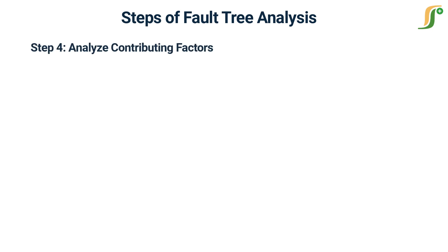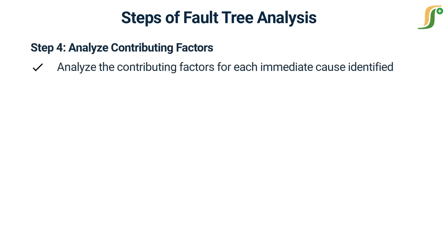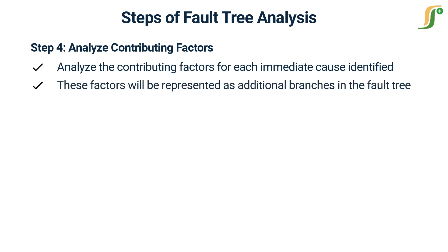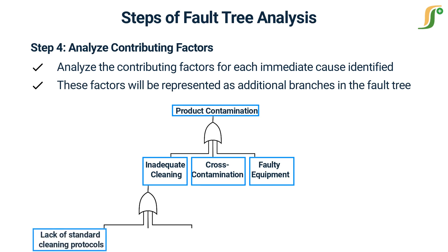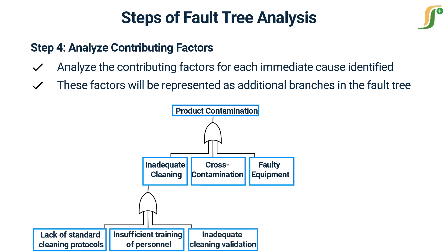In step 4, analyze the contributing factors for each immediate cause identified. These factors will be represented as additional branches in the fault tree. For example, under inadequate cleaning, contributing factors could be a lack of standardized cleaning protocols, insufficient training of personnel, and inadequate cleaning validation.